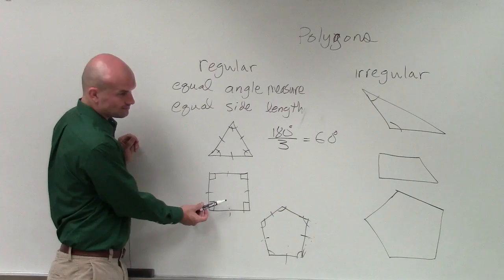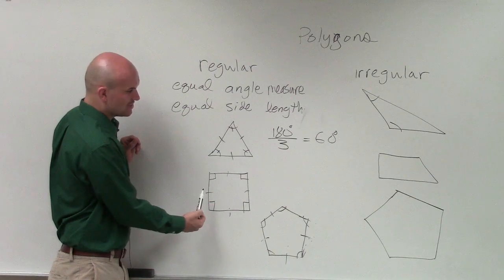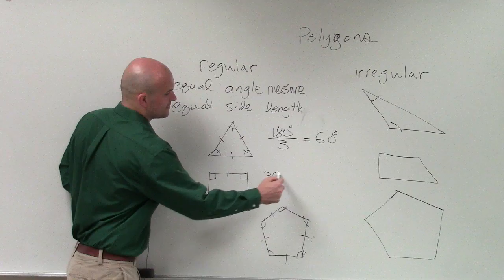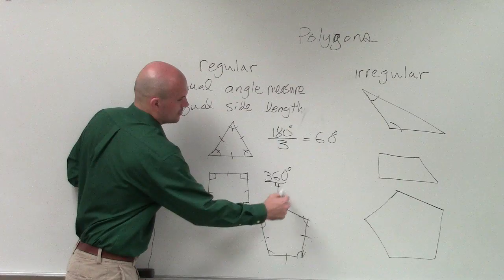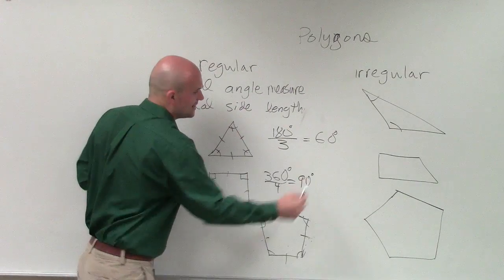So over here, we know that the sum of a quadrilateral is going to be 360. And then how many angles do we have in a quadrilateral? Four. That four of that equals 90 degrees.